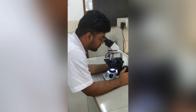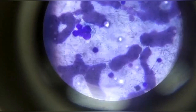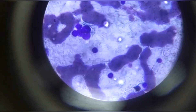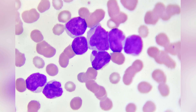This is me observing the slides of AML and CML in our pathology lab. Acute leukemia is divided into acute lymphoblastic leukemia and acute myeloid leukemia. Chronic leukemia is divided into chronic lymphoblastic leukemia and chronic myeloid leukemia.